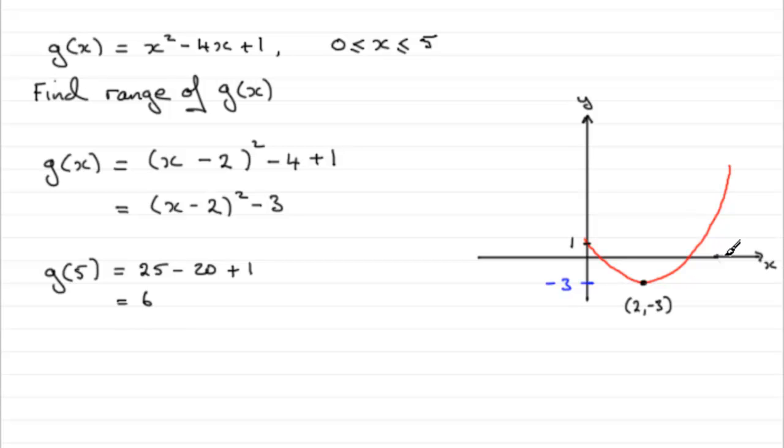If I take that point there as 5, then this point up here has a y-coordinate of 6. So if I come across there, that point there is 6.